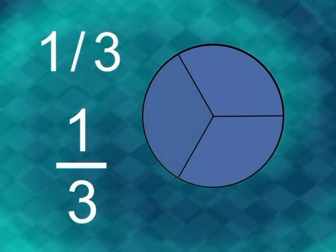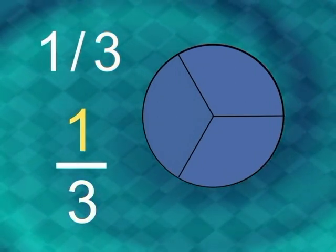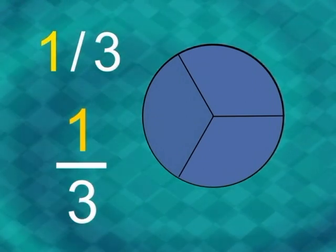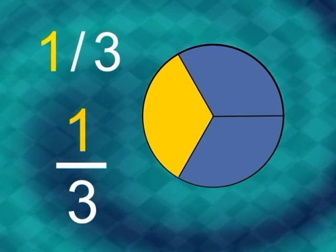The numerator is the number written on top of the bar or before the slanted line. The numerator tells you the number of parts you are observing.